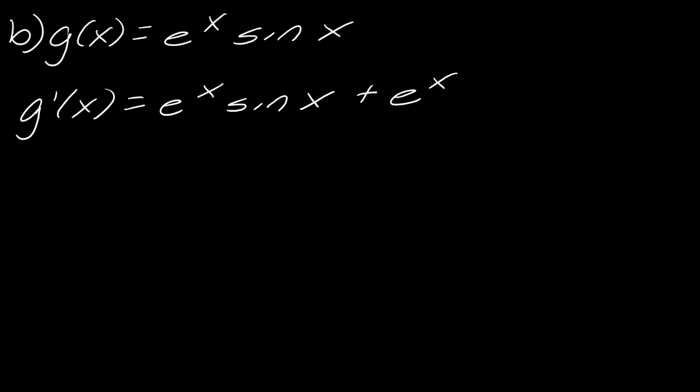Then I leave e to the x alone and I take the derivative of sine of x. The derivative of sine of x is cosine of x. And you could always simplify from here if you wanted to, but we'll just leave it like that.